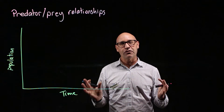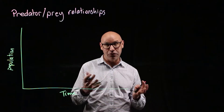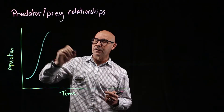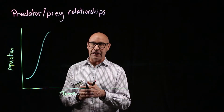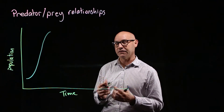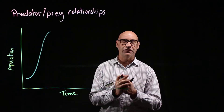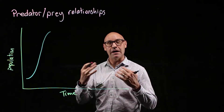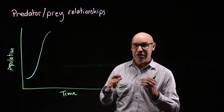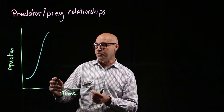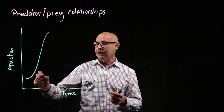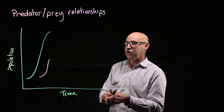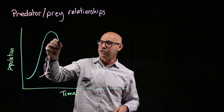When conditions are ideal for the prey — there's plenty of food and good environmental conditions for them to reproduce — their population increases. But then it gets to a point where it can't increase any more. It reaches what we call its carrying capacity because there's not enough food to sustain the population. Maybe there's the introduction of disease, or it's because there are so many prey organisms that it attracts predators.